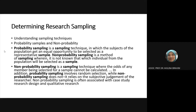For example, if you go to an apartment and knock on doors, all of them have the opportunity — it's just a matter of whether they open the door or whether they are interested to participate. That is probability sampling.